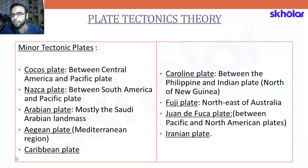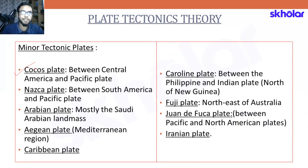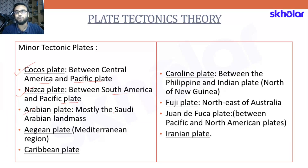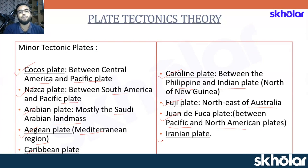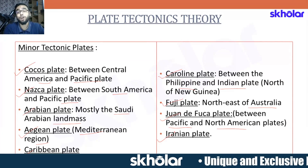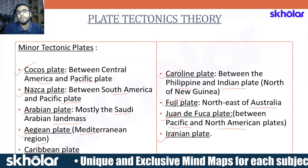Examples of minor lithospheric plates include: the Cocos plate, found between Central America and the Pacific plate; the Nazca plate, between South America and the Pacific plate; the Arabian plate, mostly in the Saudi Arabian landmass; the Aegean plate in the Mediterranean region; the Caribbean plate in the southeastern part of North America; the Caroline plate between the Philippine and Indian plates; the Fiji plate northeast of Australia; the Juan de Fuca plate between the Pacific and North American plates; and the Iranian plate.